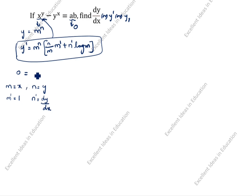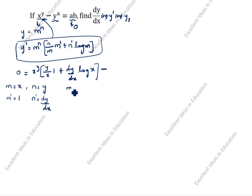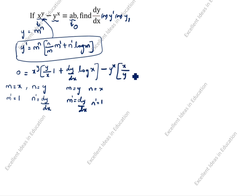0 is equal to: m power n is x power y, n is y, m is x, m dash is 1, plus n dash is dy by dx, log m is log x. After that we will differentiate y power x, minus. Here m is equal to y, n is equal to x. Differentiation of m dash: differentiation of y is dy by dx. Differentiation of n dash is 1. m power n is y power x. Opening the bracket: n is x, m is y, m dash is dy by dx, plus n dash is 1, log m is log y.